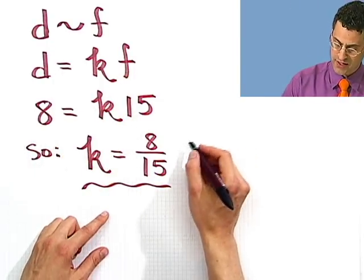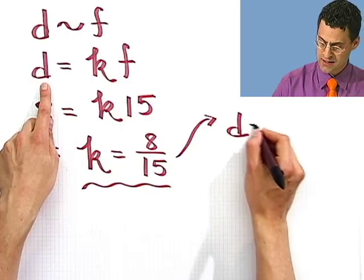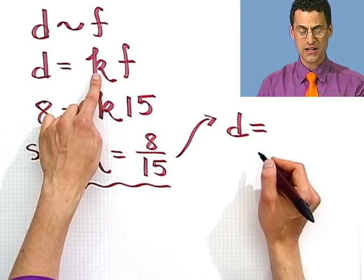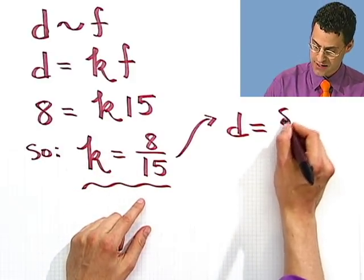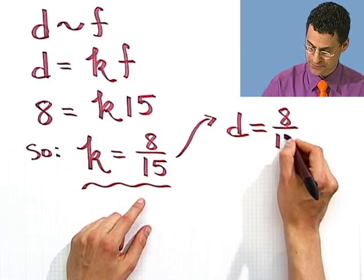And so what I now see, coming back to here, is that d, see, before I just knew that the things were equal up to a constant. But now I know exactly, numerically, what the constant is. It's 8 over 15 times f.